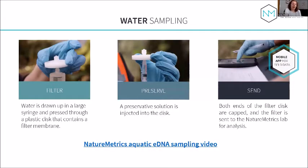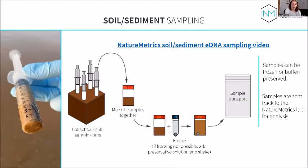For water collection, water is drawn up through a large syringe or peristaltic pump and passed through a plastic disc containing a filter membrane. A preservative solution is injected to preserve the DNA, then the filter disc is capped and sent back to the lab. For soil and sediment, multiple subsample cores are collected within a plot, mixed together, frozen or treated with preservative, and sent to the lab for analysis.